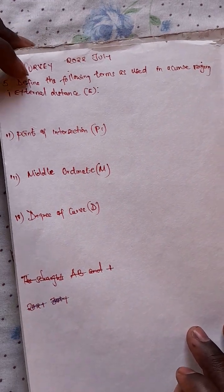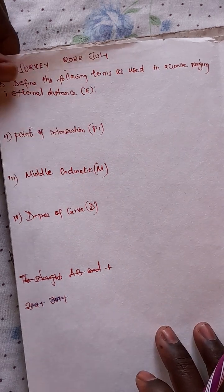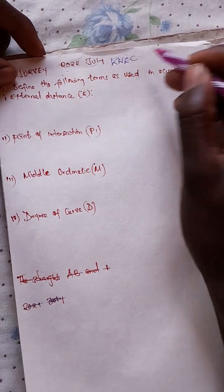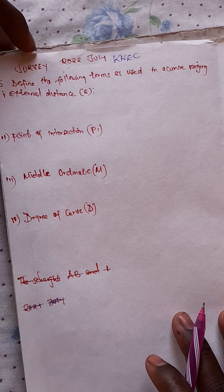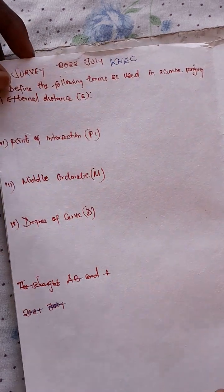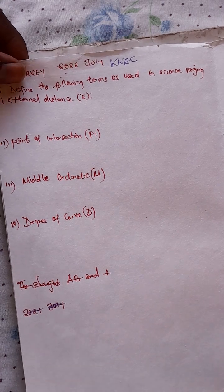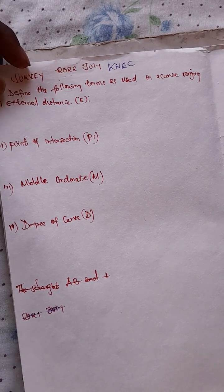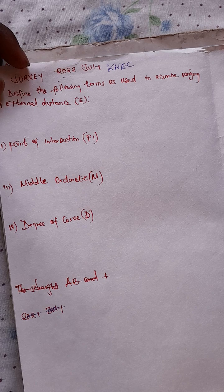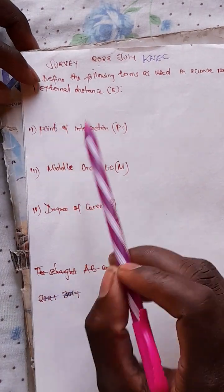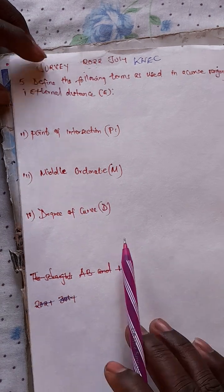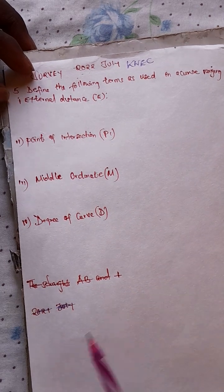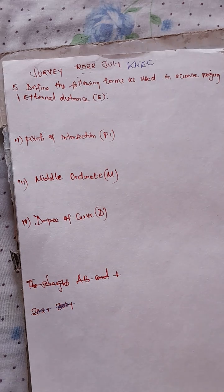Hi, welcome to my YouTube channel. I have a question from the 2022 July neck exam. The question was set in July 2022 and it was on simple curves or curve ranging. It was question number five: define the following terms as used in curve ranging. It was worth three marks, so I decided to do it.